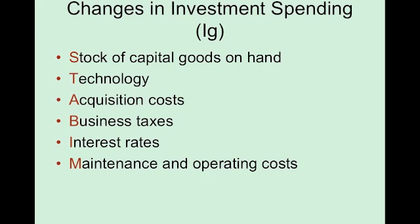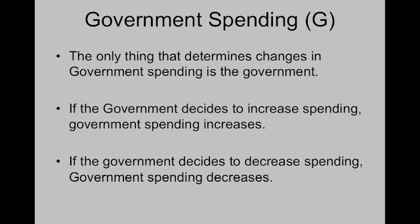G stands for government spending. The only thing that affects government spending is the government and how much it decides to spend. There are no automatic connections — if something happens in the economy, the government doesn't automatically increase or decrease spending. The government has to vote and decide. It's a group of politicians that will vote and decide what the government is going to spend and what they're going to spend it on.